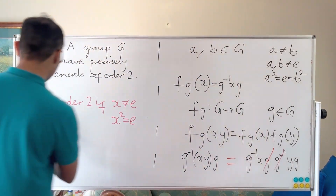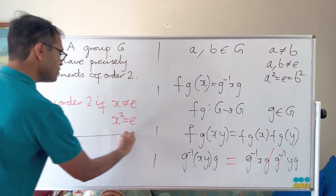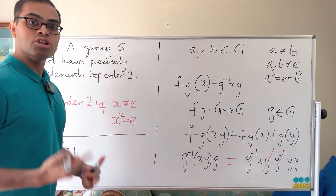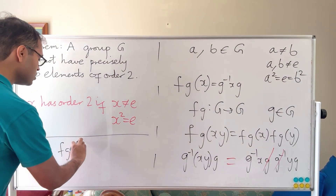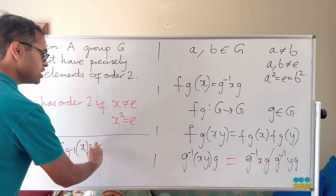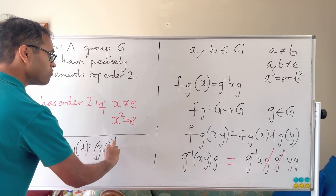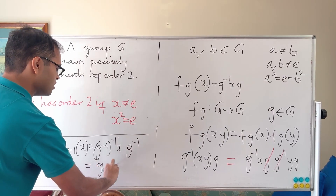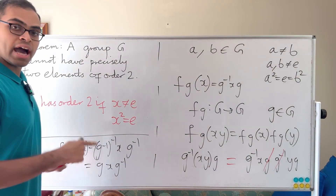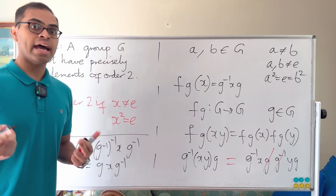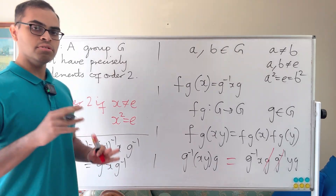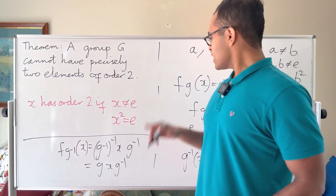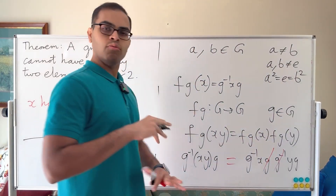The function f_g also has an inverse: it is f_{g⁻¹}, conjugation by g⁻¹. Conjugation by g⁻¹ sends x to (g⁻¹)⁻¹ x g⁻¹ = gxg⁻¹. You can verify that applying f_{g⁻¹} followed by f_g gives the identity function — I'll leave that as an exercise. This confirms f_g is an automorphism.